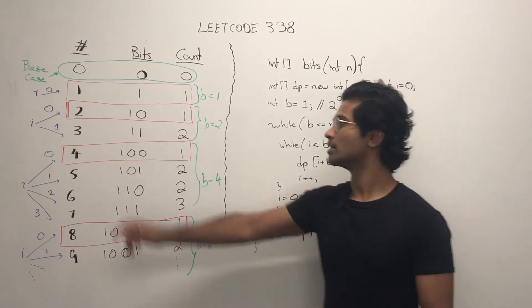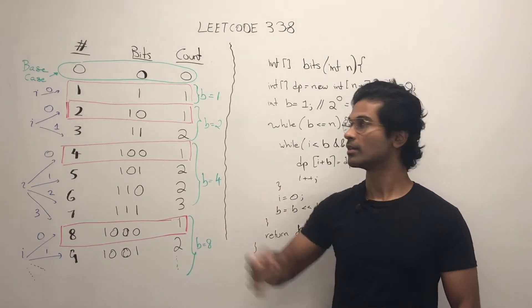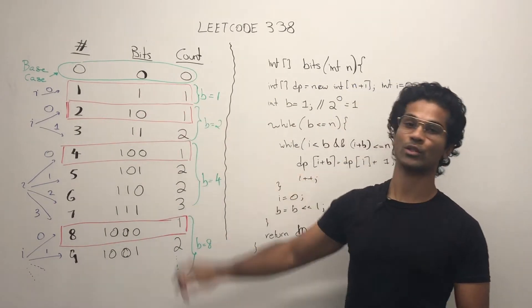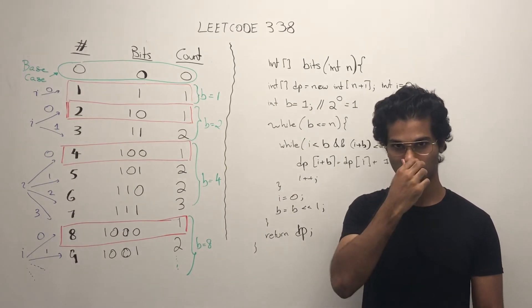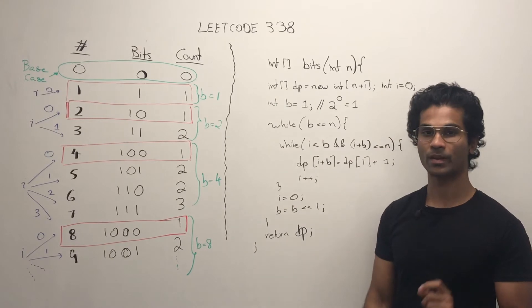So in our problem 0 is going to be the base case. So for 0, this is 0 and the count is also going to be 0.